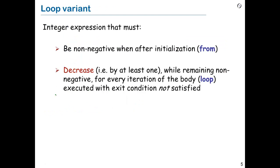The technique is the loop variant. A loop variant is an integer expression with two properties. First, the variant must be non-negative after initialization — remembering that every loop begins with an initialization, even an empty one. Second, and most importantly, it is going to decrease. And because it's an integer, decreasing means decreasing by at least one whenever the loop body is executed. However, in decreasing, it remains non-negative. So the idea is: you have an integer quantity that is always non-negative, and every time through the loop, it decreases by at least one.